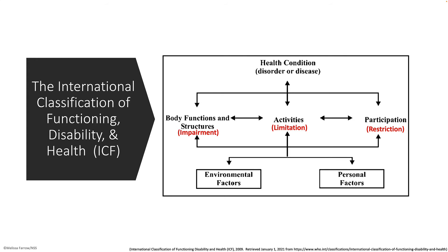Then to the very left, we have body function and structure. This is going to be anatomic or functional impairments of the body that are impacting the activity at the center of the model. Moving to the center and the far right are activities and participation. Activity refers to the thing that the patient is or is not able to do because of impairment, and participation refers to the things that the patient wants to do but is restricted because of the limitation.